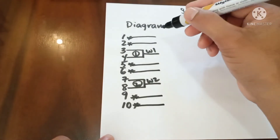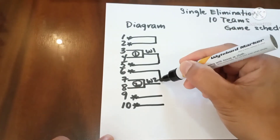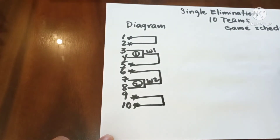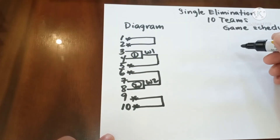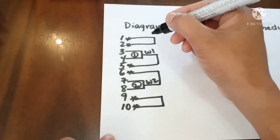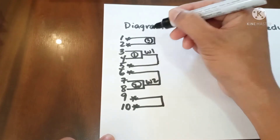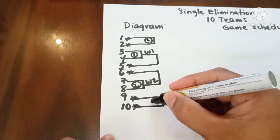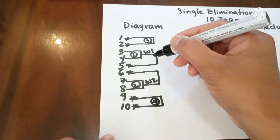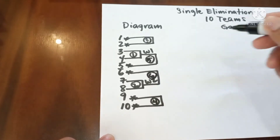Now the vertical line from the top again, then the game numbers from the top again. We will prioritize the two competing byes. So game 1, game 2, this will be game 3, and then game 4, then game 5, then this will be game 6.